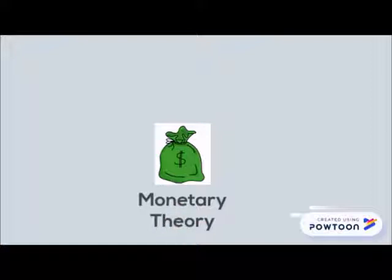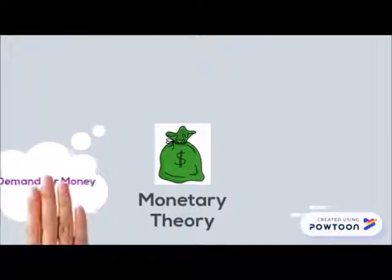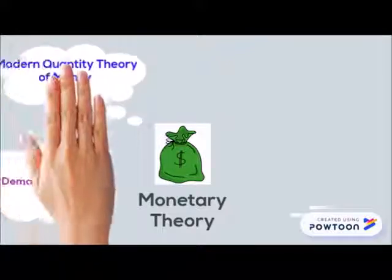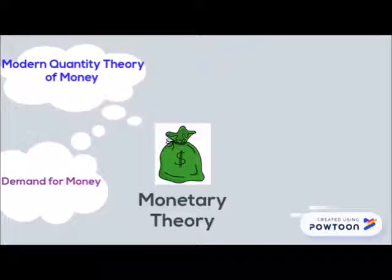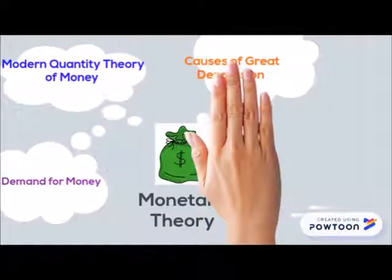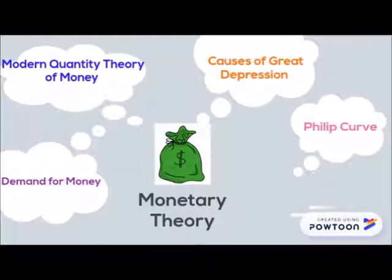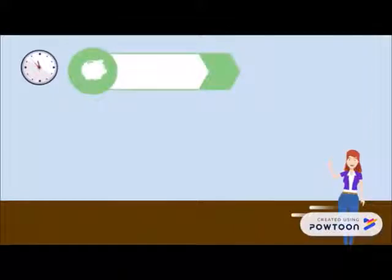The tenets of the Chicago School became lasting contributions in monetary theory. First, the demand for money. Second, the modern quantity theory of money. Third, the cost of the Great Depression. Fourth, the long-run vertical Phillips curve.